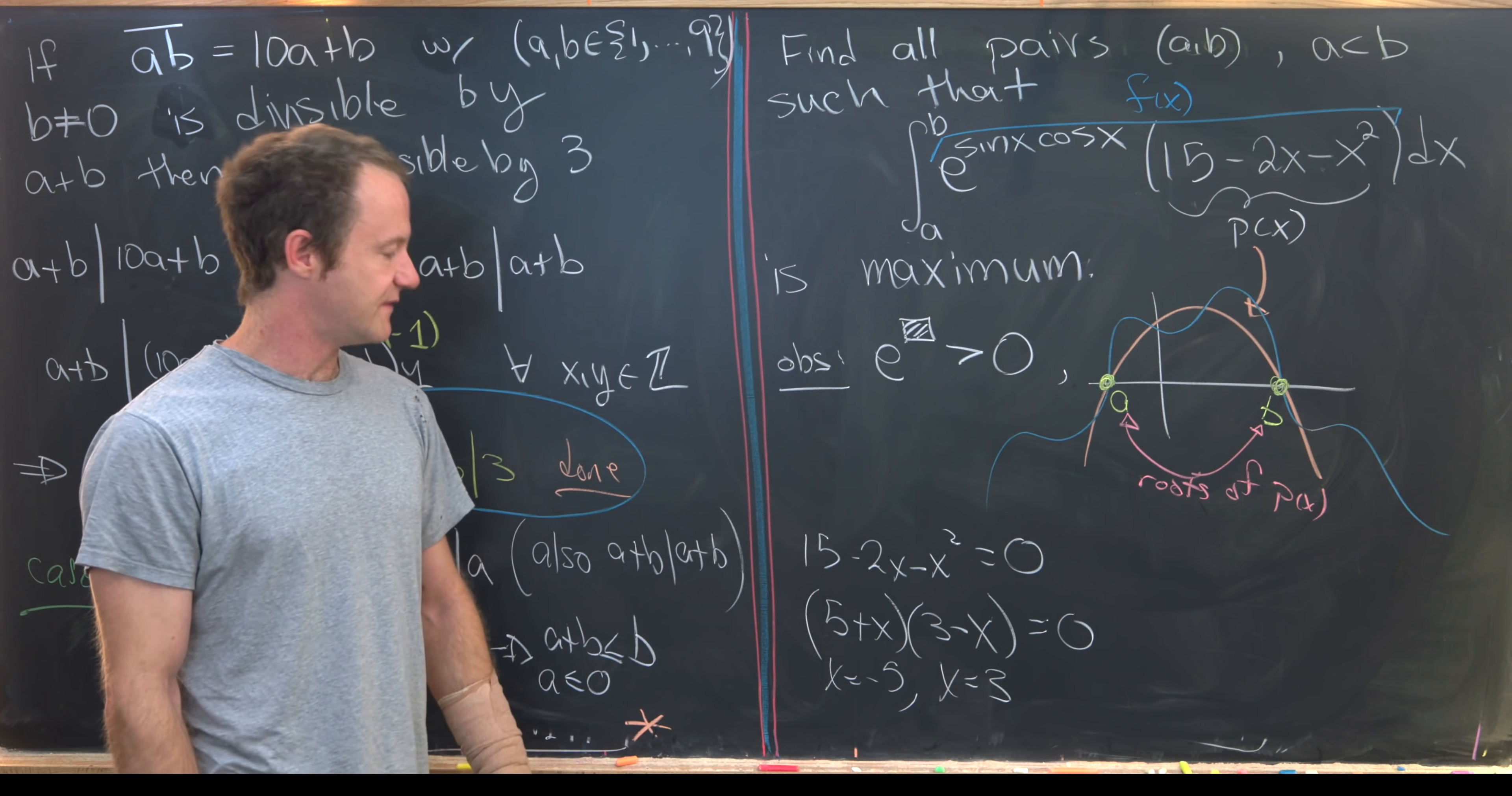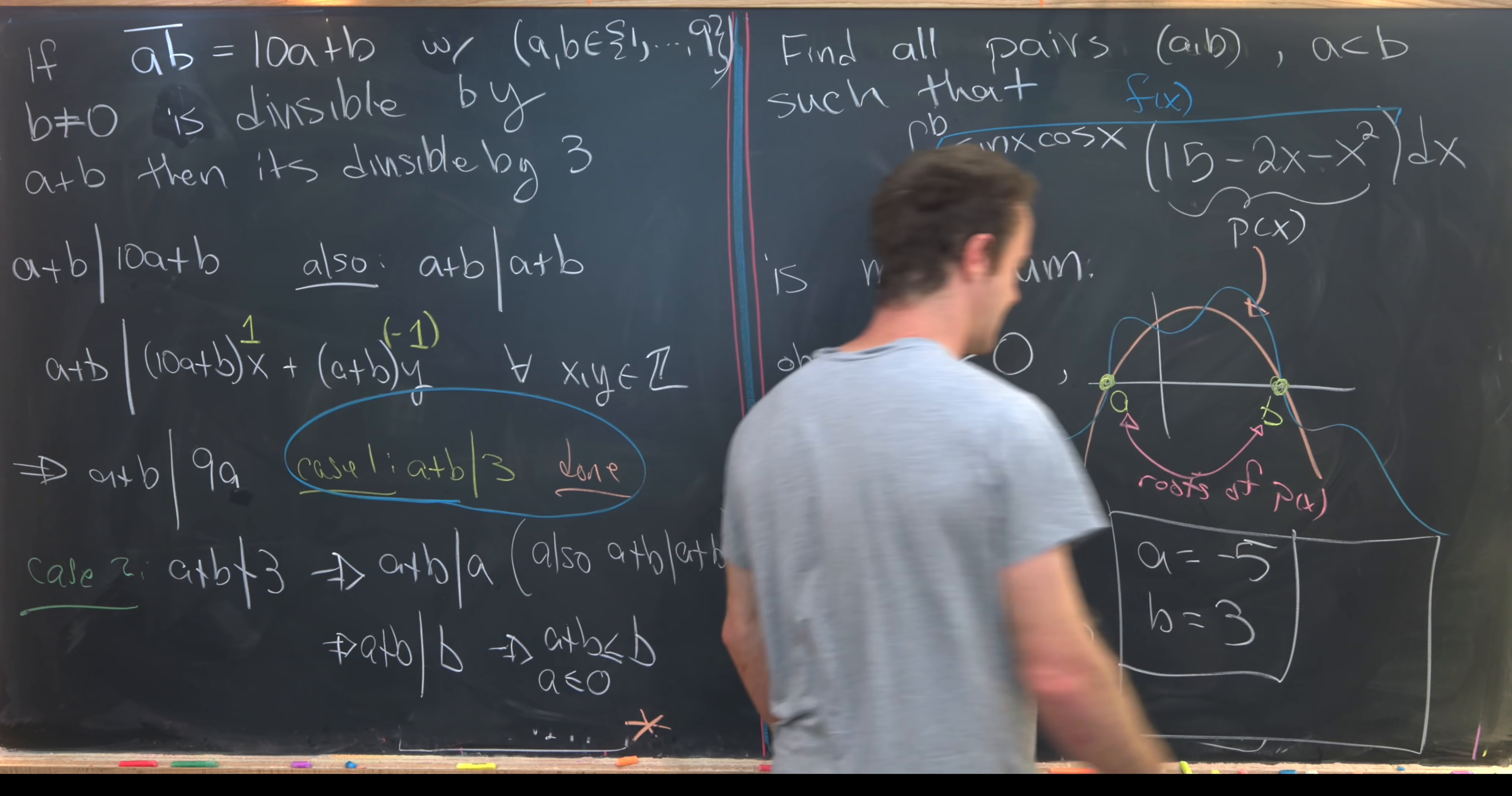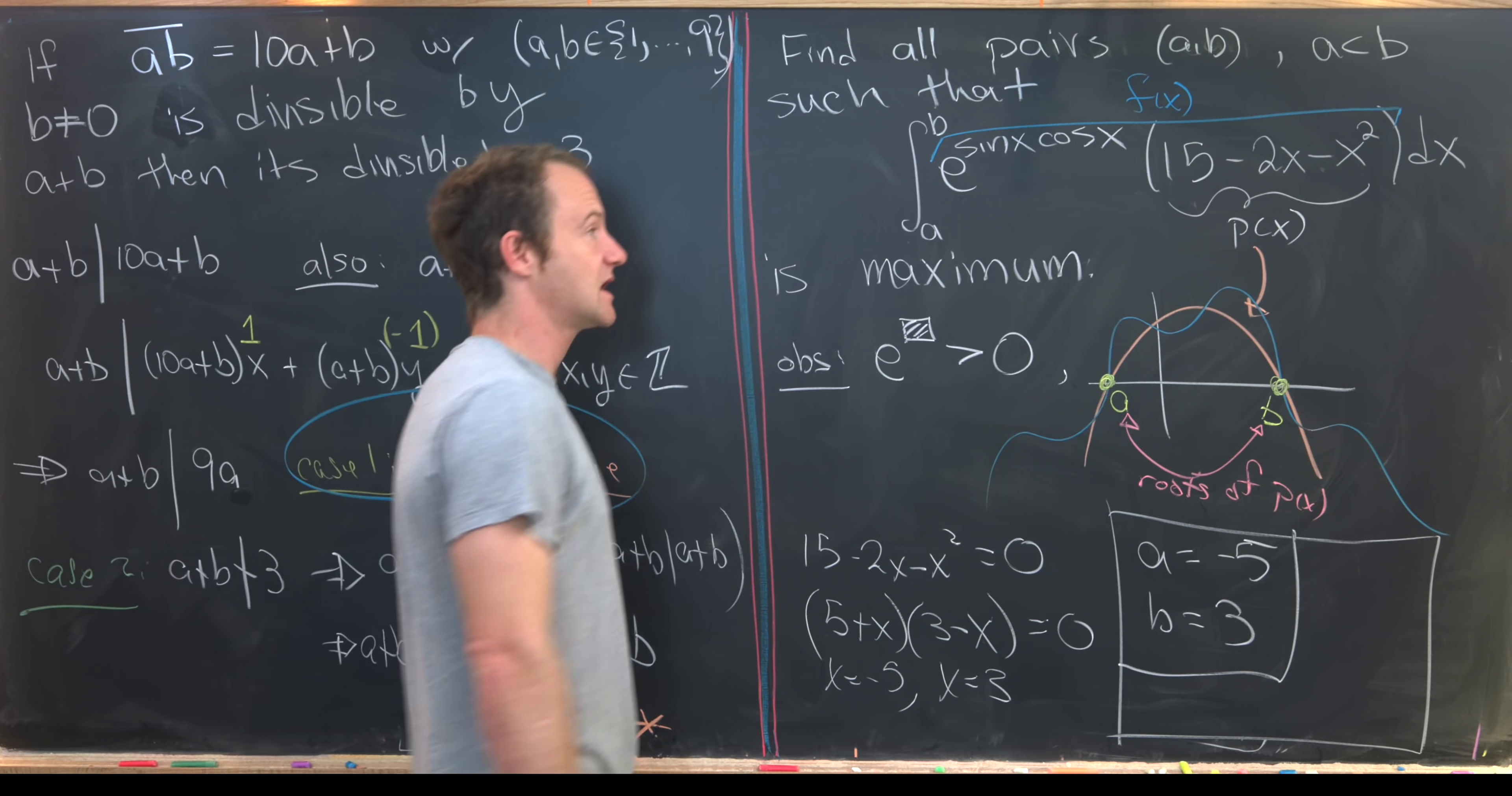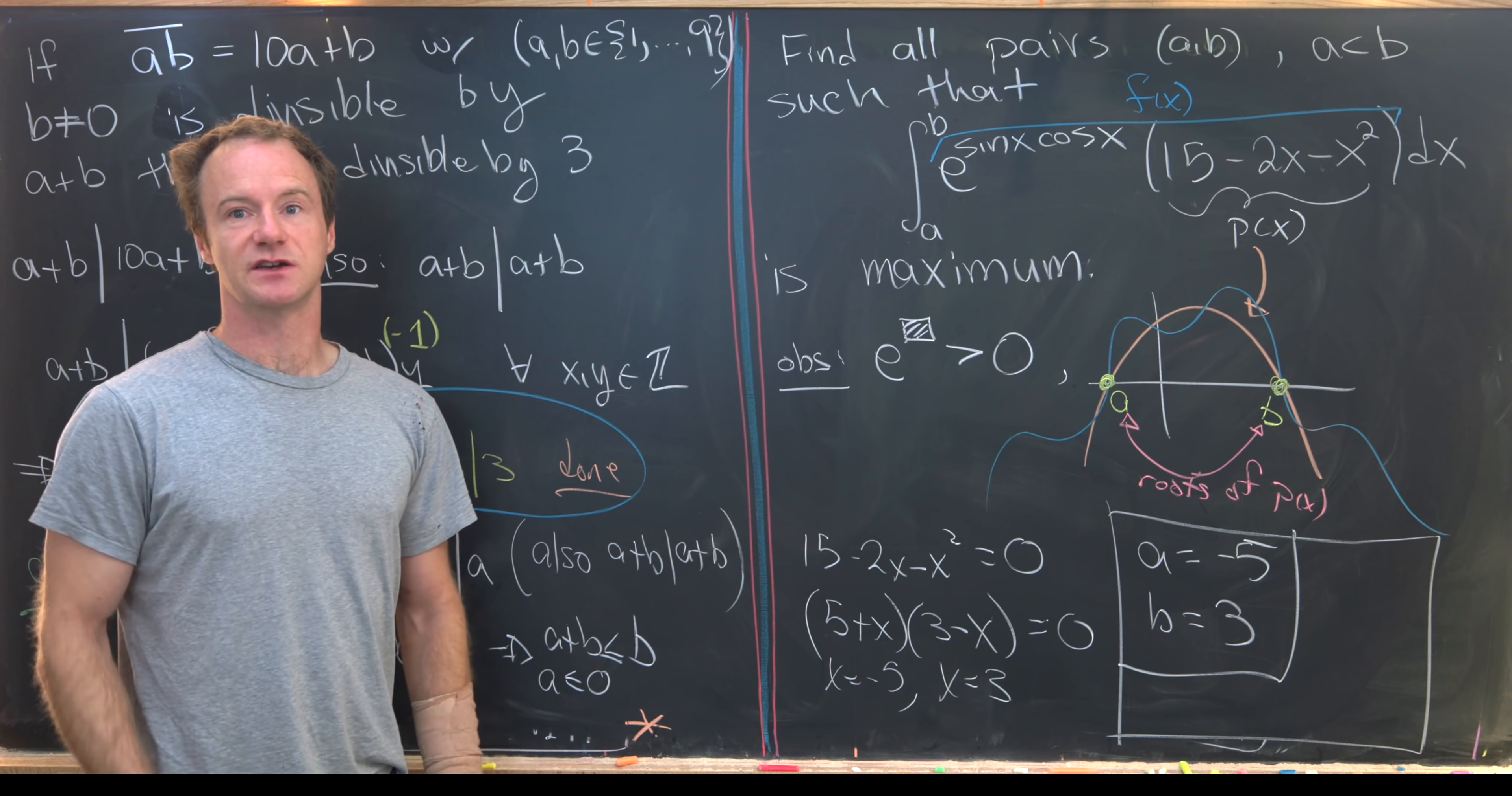So that tells us our roots are negative 5 and positive 3. And again, by our previous discussion, those roots give us these values of a and b. So in the end, we have a equals negative 5 and b is equal to 3. So that's going to maximize the value of this integral. And those are the only two numbers that will maximize the value of this integral because those are the only two roots of this polynomial. Notice we didn't get anywhere close to calculating the actual value of the integral. We just found a place where it is maximum. And that's a good place to stop.